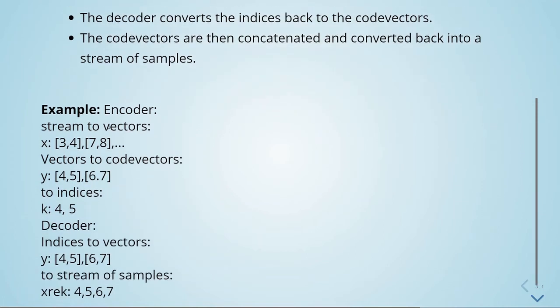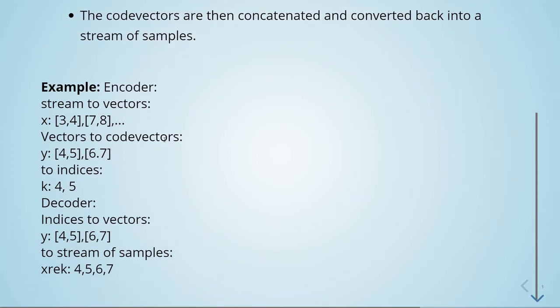So, for example: an encoder takes the stream to vectors, then vectors to code vectors, to indices. Then the decoder takes the indices to vectors, and then vectors back to the stream of samples.